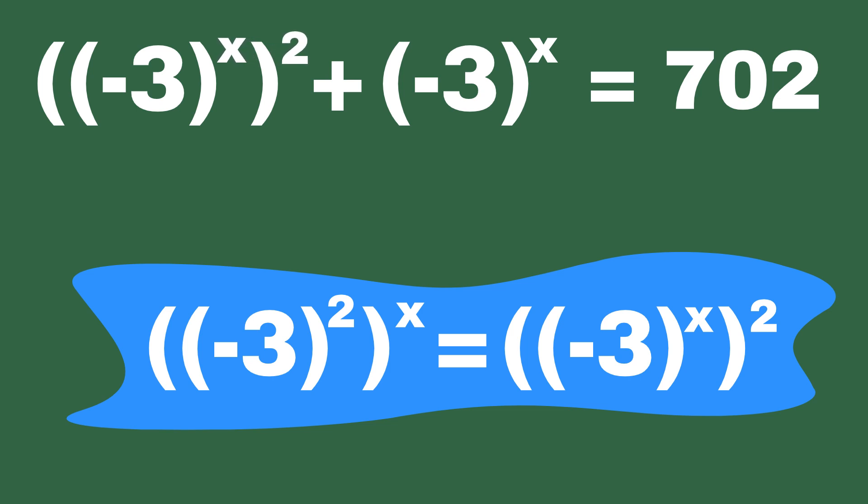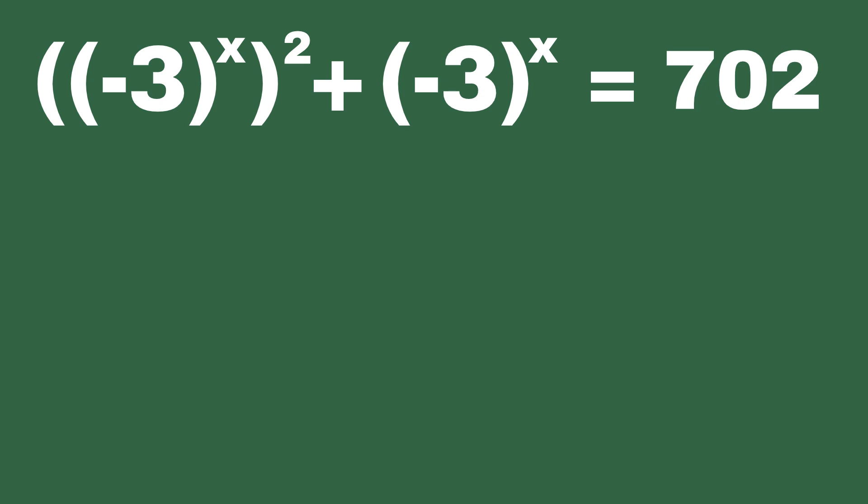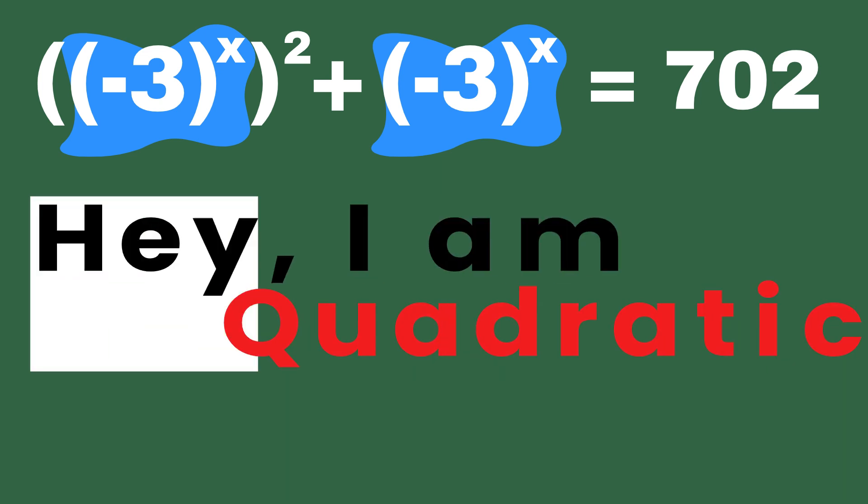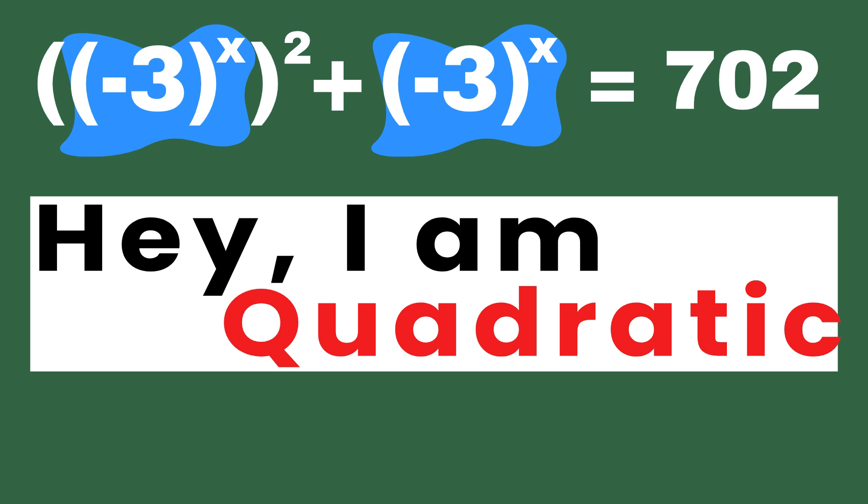Alright, by now, a little bell should be ringing in your mind, maybe even one of those big cathedral bells that echoes for miles. Can you see it yet? Take a good look at what we're dealing with here, we've got something, and then we're adding that same something raised to the power of 2, and it's all equal to a number. Sound familiar? It's like the equation is standing there, waving its hands frantically, yelling, hey, I'm a quadratic. You've seen me before, right?